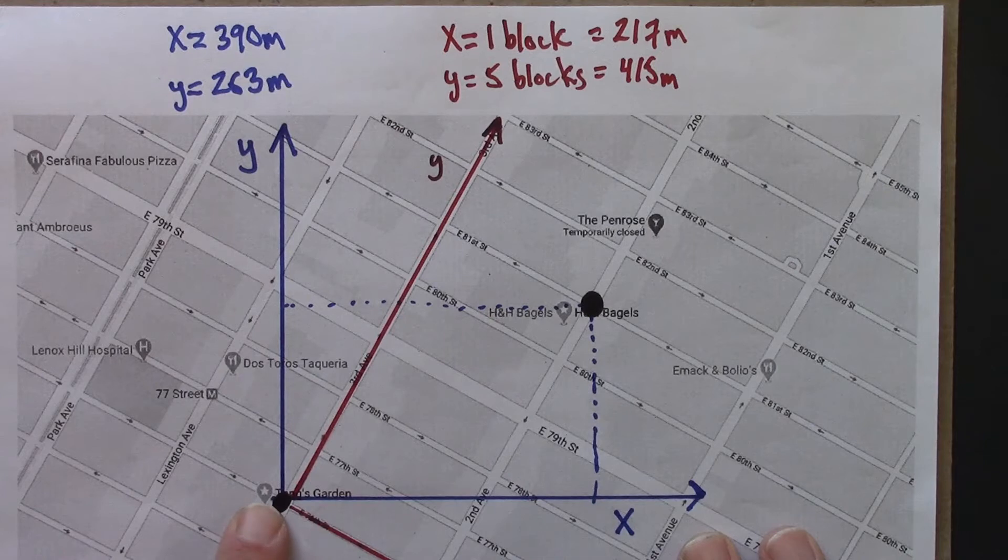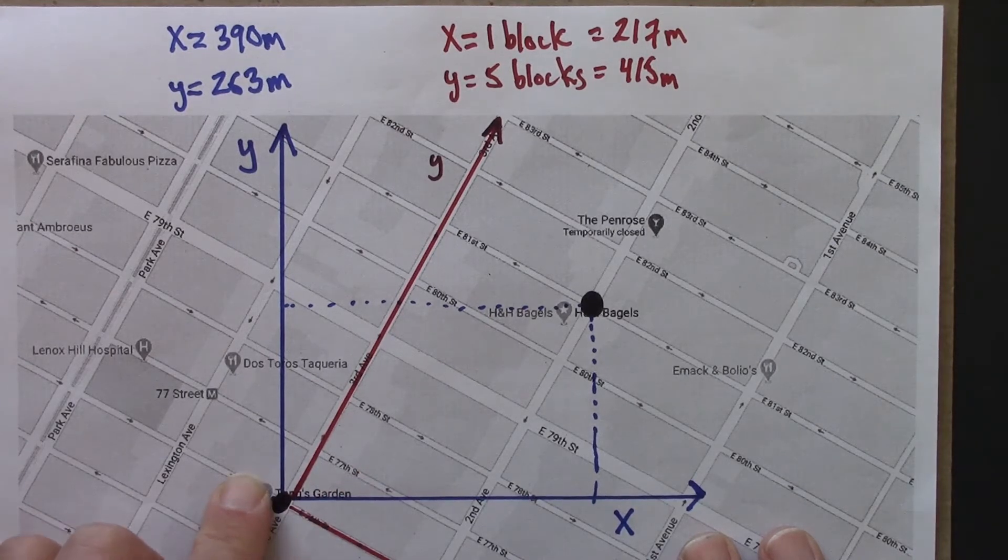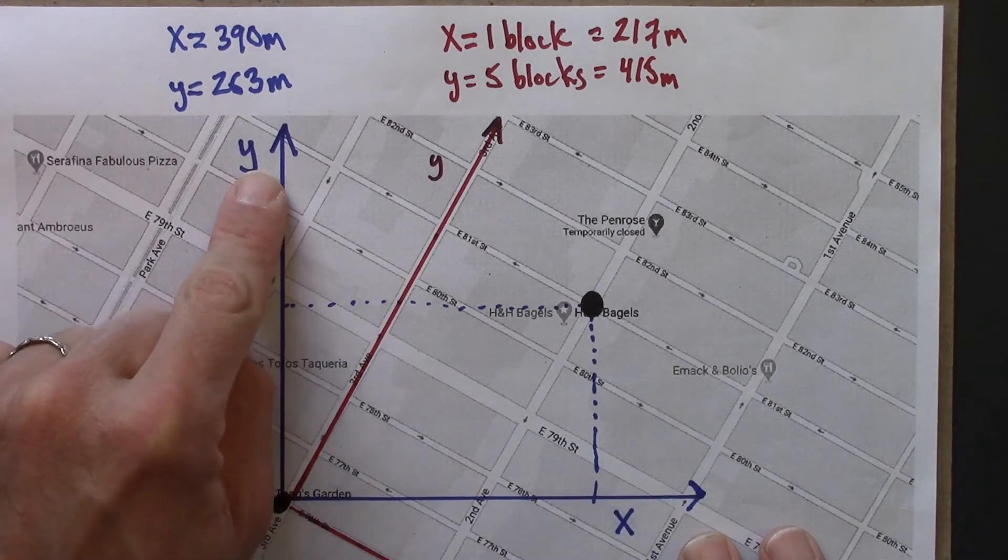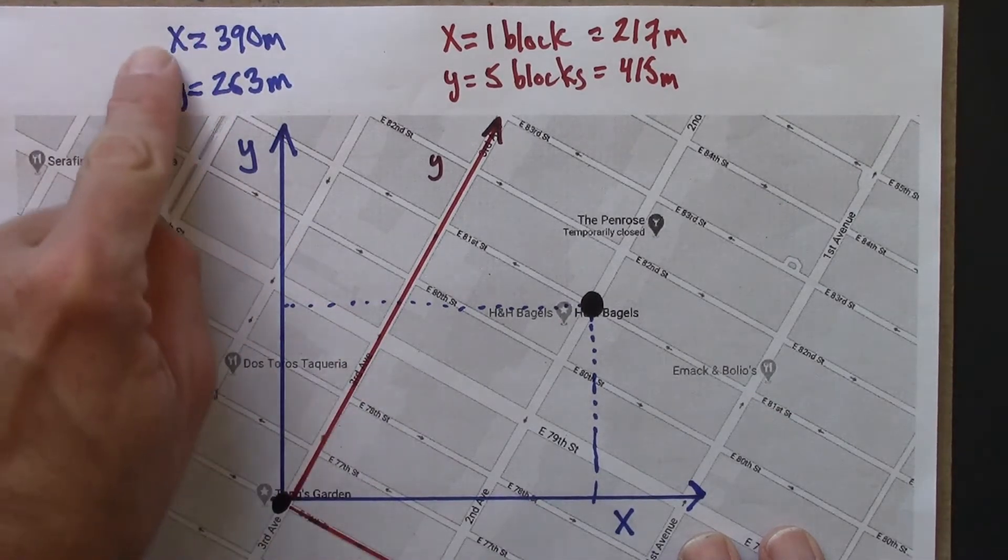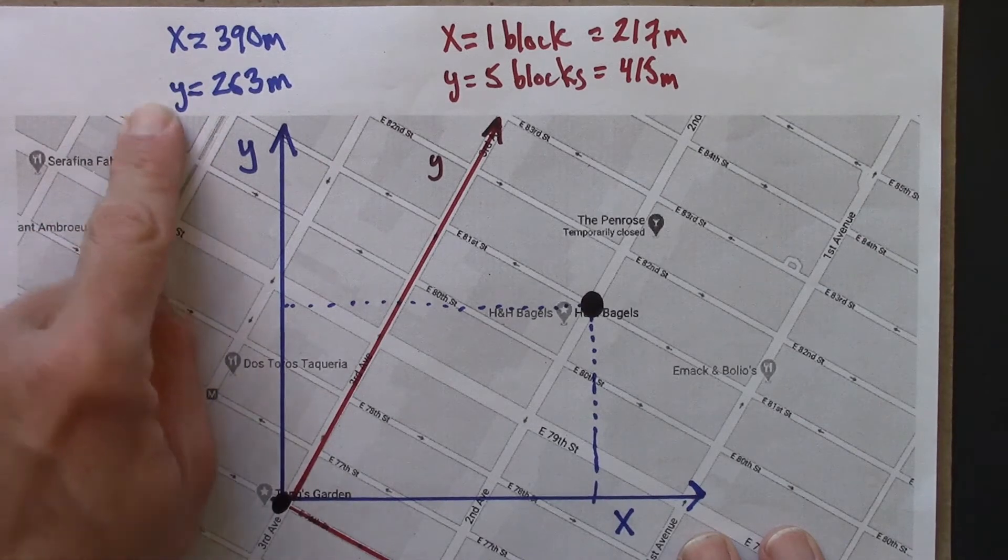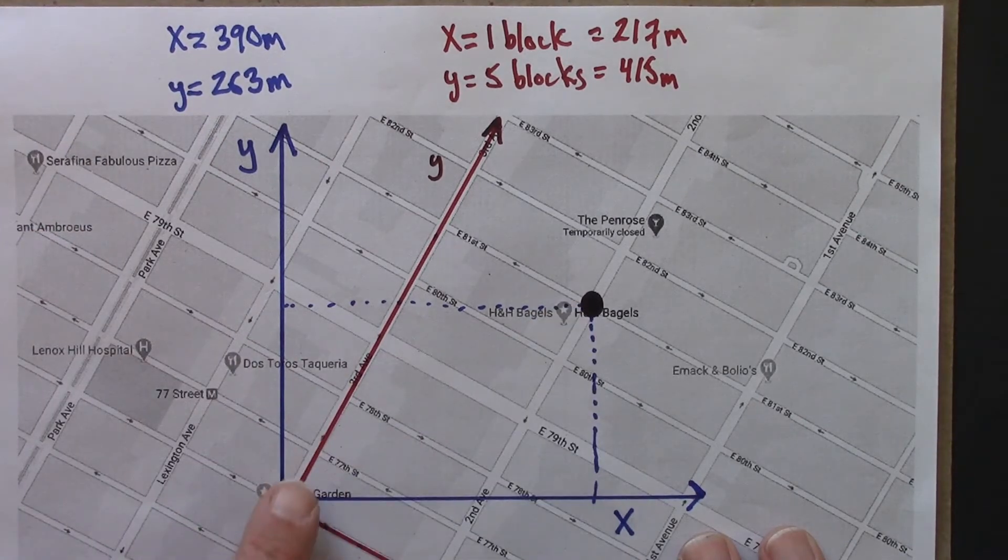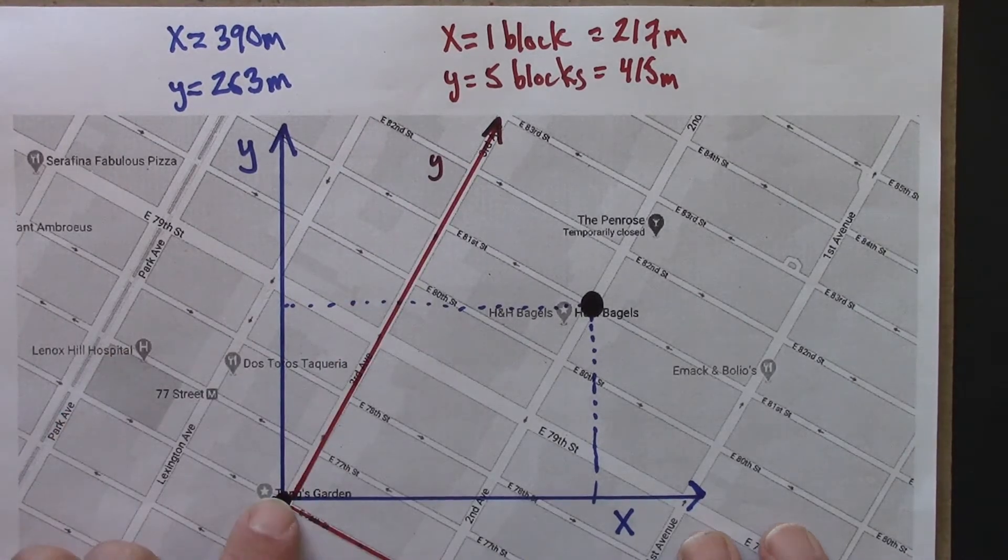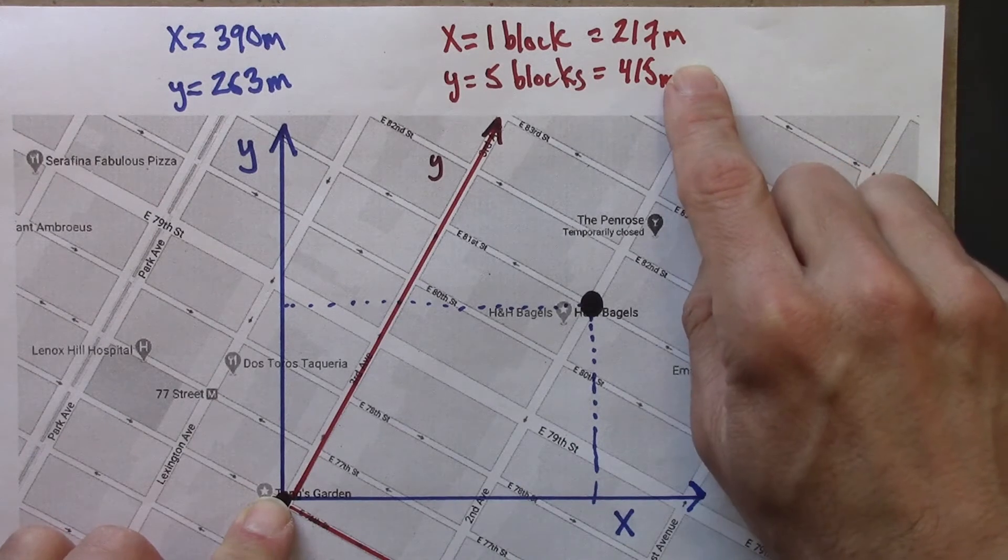We've seen that using different choices for coordinates will lead to different coordinate values. So the blue x and y, true north true east, gives these values for this point in space. And the New York ones, going up 3rd Avenue and then across town, give a different pair of coordinate values.